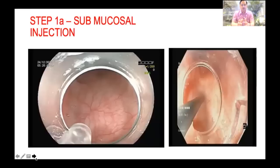POEM procedure is mainly divided into four steps. Step one is mucosal injection and mucosal incision, then entry into the submucosal space. Step two is submucosal tunneling. Step three is myotomy. Step four is closure of the mucosal incision.